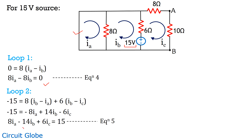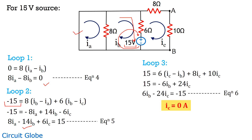For loop 2, we get: 8·IA − 14·IB + 6·IC = 15. However, since the current is leaving the negative terminal and reaching the positive terminal, the polarity is considered in reverse — so it becomes −15. For loop 3, the equation is: 6·IB − 24·IC = −15.